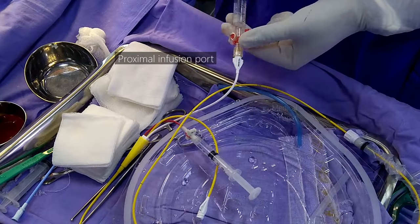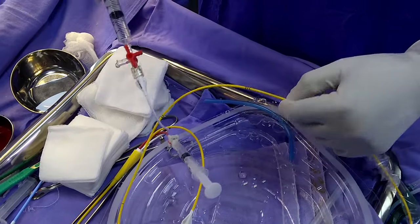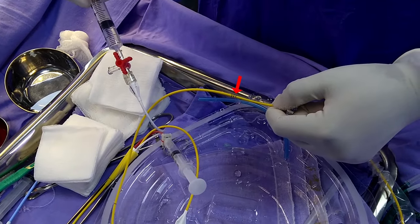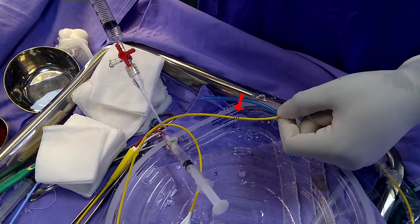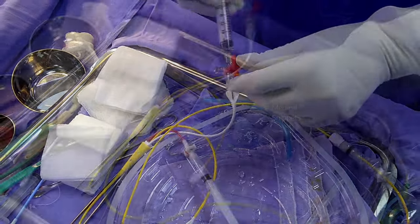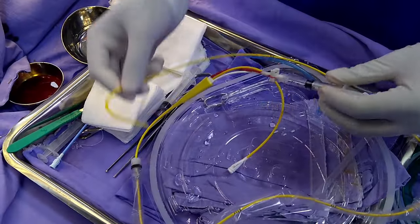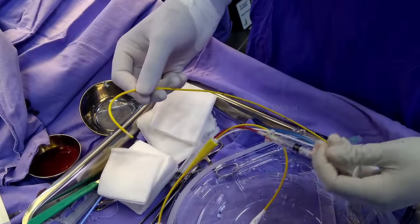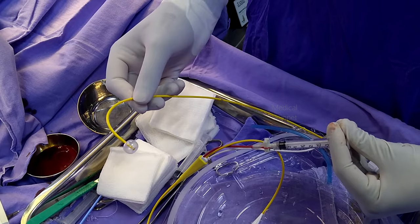Next, the proximal infusion port is flushed. One can see the saline coming out of the opening at the 30 cm mark, as discussed earlier. The balloon of the catheter is checked by inflating 1.5 ml of air using the syringe as shown.